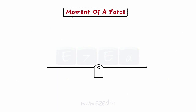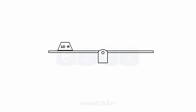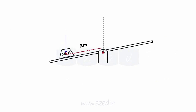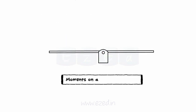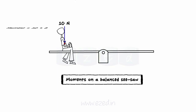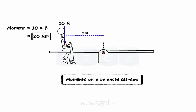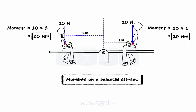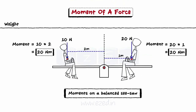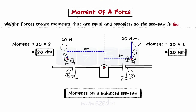Consider the seesaw shown. Imagine that a force of 10 Newtons acts on a seesaw 2 meters from the pivot. Here is an example of balanced moments: a boy weighing 10 Newtons at 2 meters from the pivot is balancing another boy weighing 20 Newtons at 1 meter from the pivot. The weight forces of the two boys create moments of 20 Newton meters that are equal and opposite, so the seesaw is balanced.